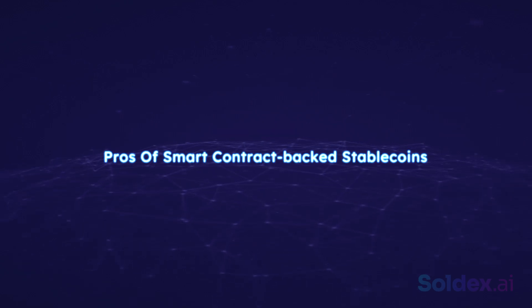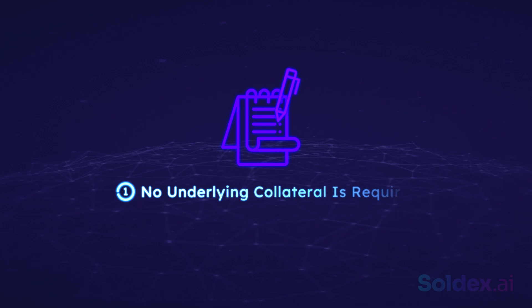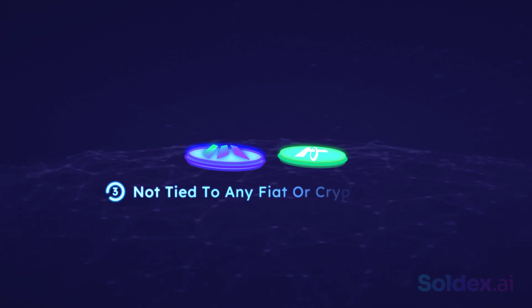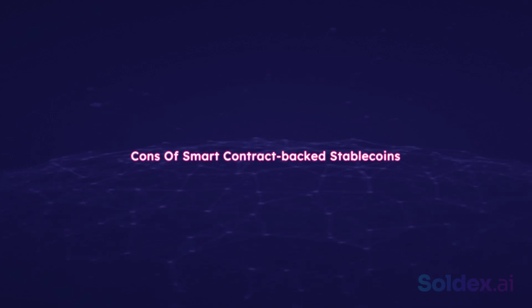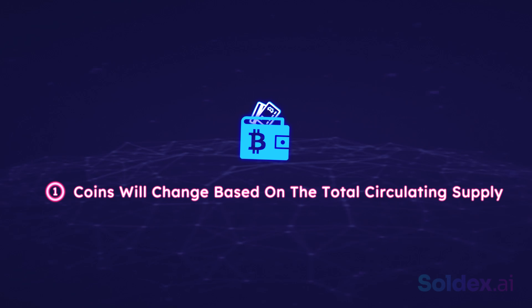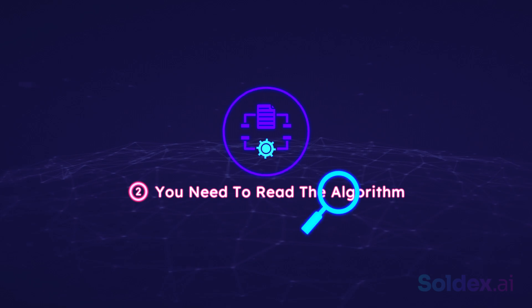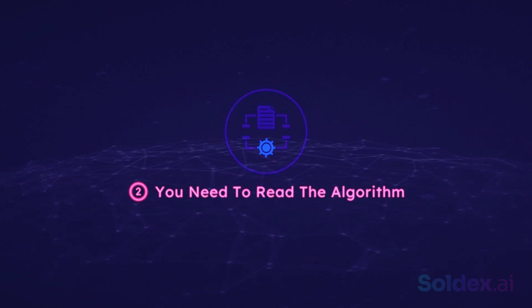Pros of smart contract-backed stablecoins: One, no underlying collateral is required. Two, it's controlled by a public and easily accessible algorithm. Three, it's not tied to any fiat or cryptocurrency. Some cons of smart contract-backed stablecoins include: One, the balance of coins in your wallet will change based on the total circulating supply. And two, you need to read the algorithm or at least trust it.